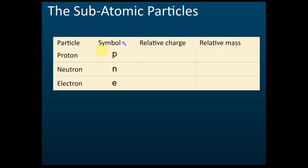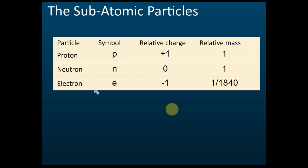For proton, its relative charge is positive one — this is not the actual charge, just a relative charge. The relative charge of neutron is zero, meaning it is neutral. The relative charge of electron is negative one. For mass, the relative mass of proton is one, neutron is one, and electron is one over 1840.